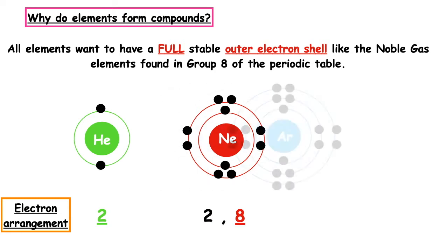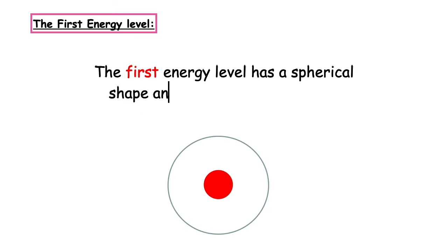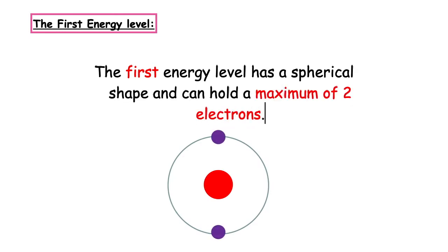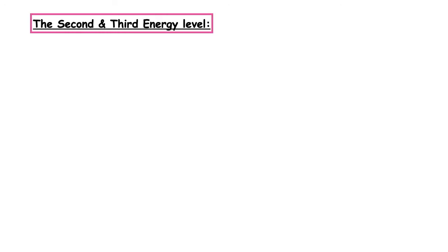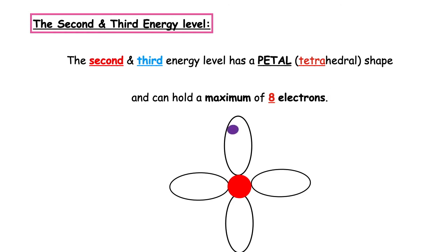If the third energy level is the outermost occupied energy level, it also wants to occupy a total of eight electrons. If the outermost occupied energy level is the first, it has a spherical shape of two electrons. If the outermost occupied energy level is the second or third energy level, we represent that by a petal shape, which is known as a tetrahedral. Remember the word tetra means four, so the petal has four petals. It can hold a maximum of eight electrons.